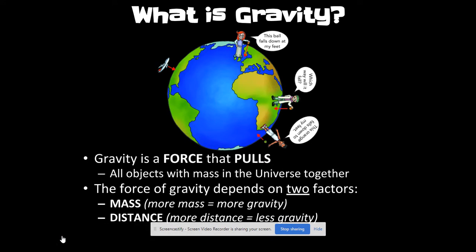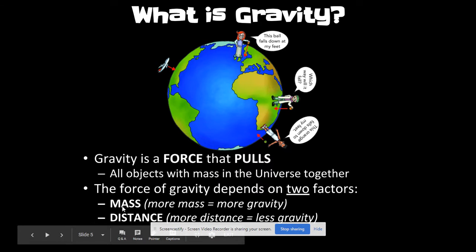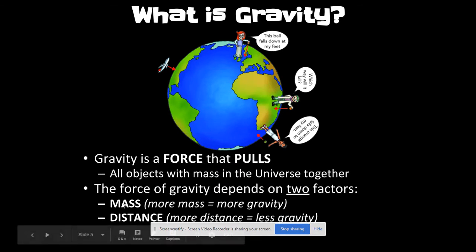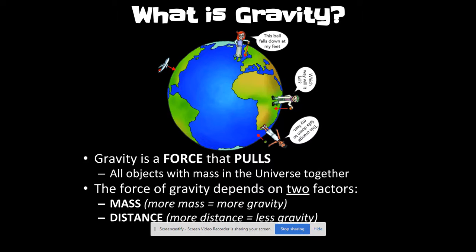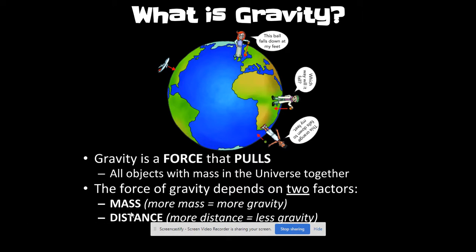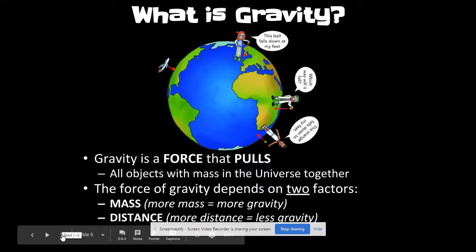Let's start with gravity. It is a force that pulls. All objects with mass in the universe pull on one another depending on how massive they are — like our Sun — or their distance. Planets closer to the Sun are pulled harder by gravity, and planets further away experience less pull. Both mass and distance influence the force of gravity. Even though the Sun is really massive, the Moon's distance from Earth actually causes the Moon to exhibit a greater force on Earth's ocean tides — we'll learn that later.